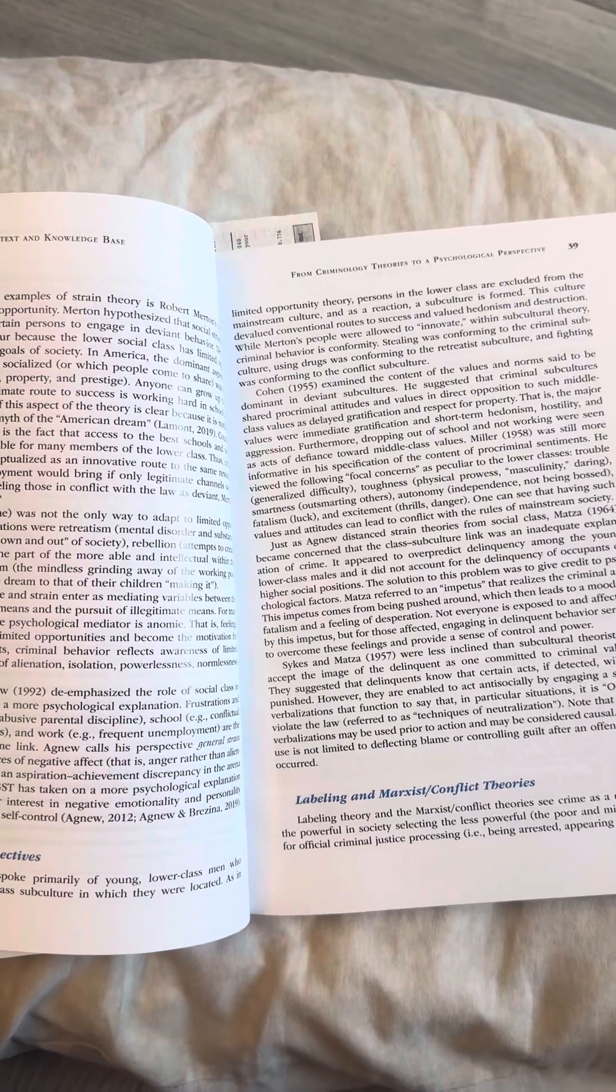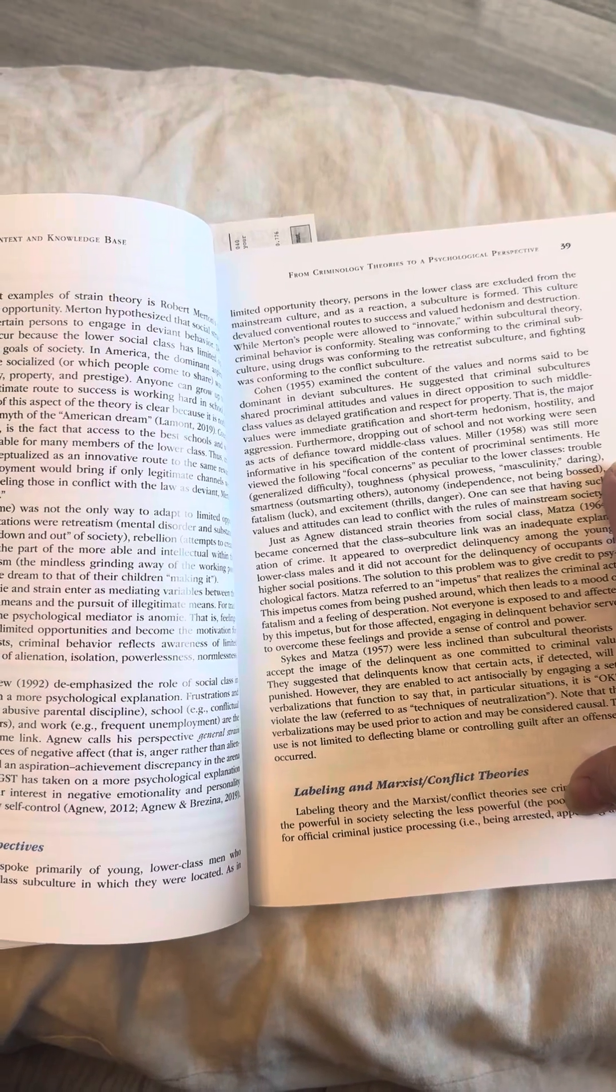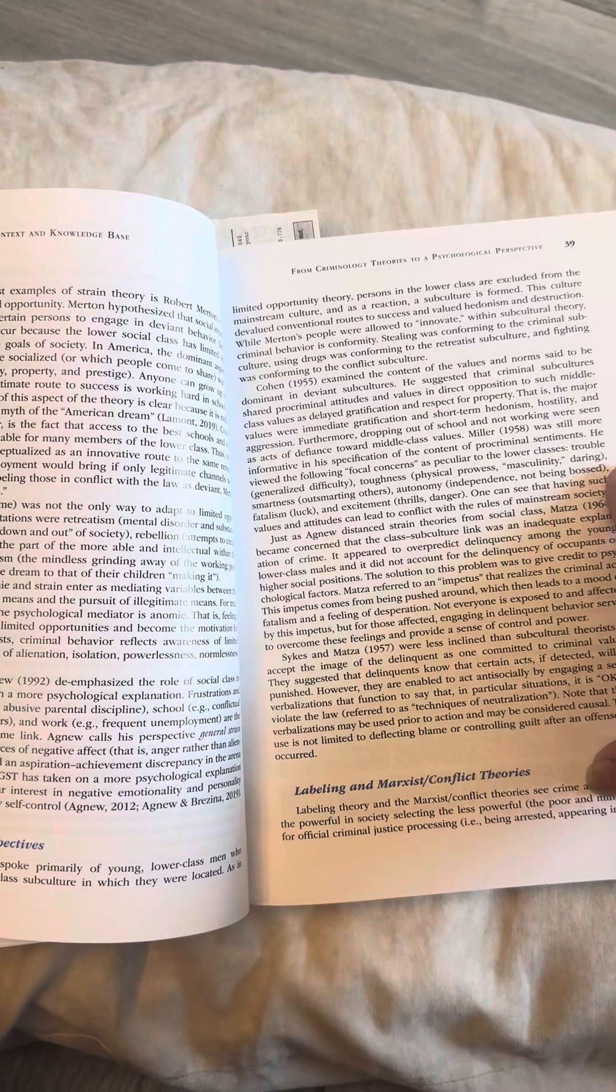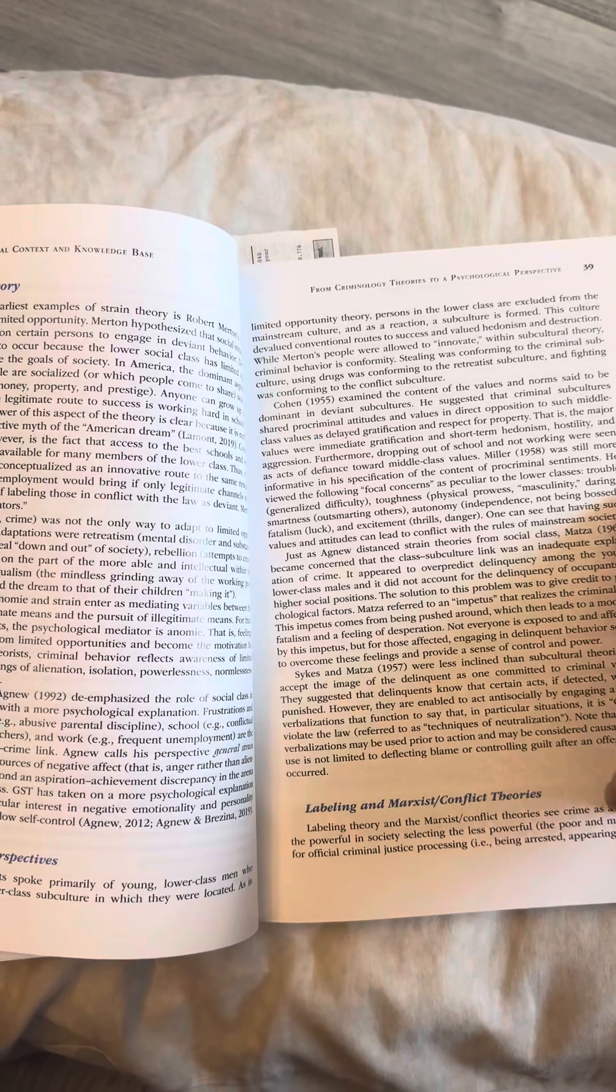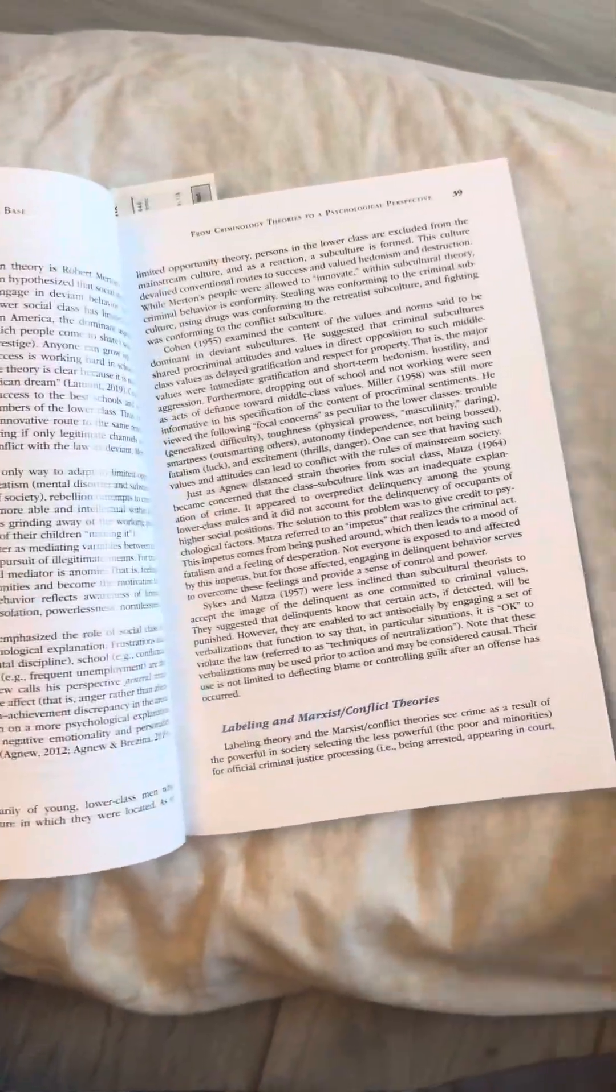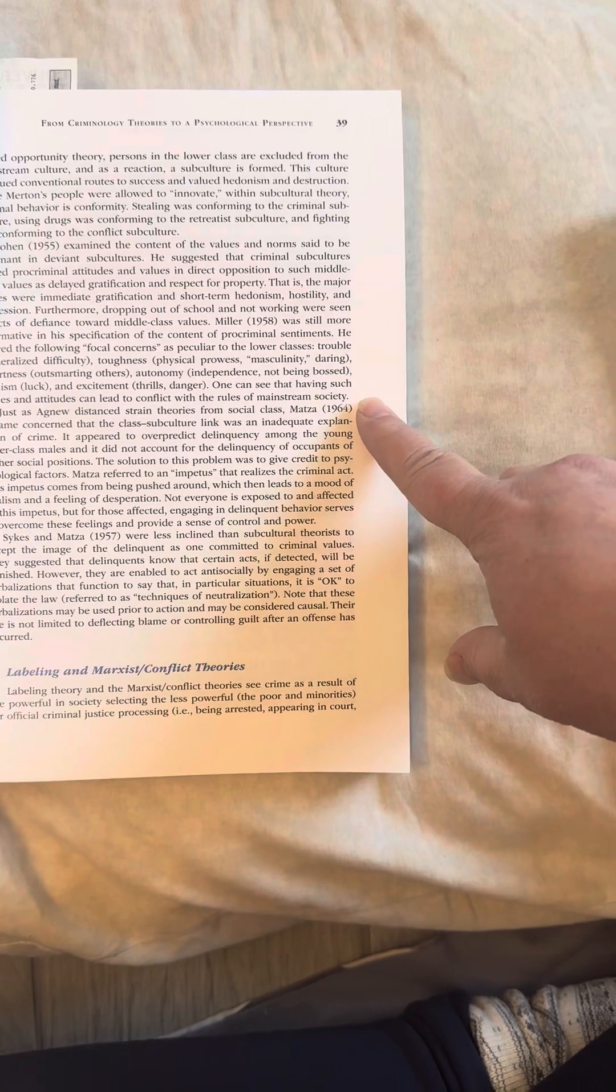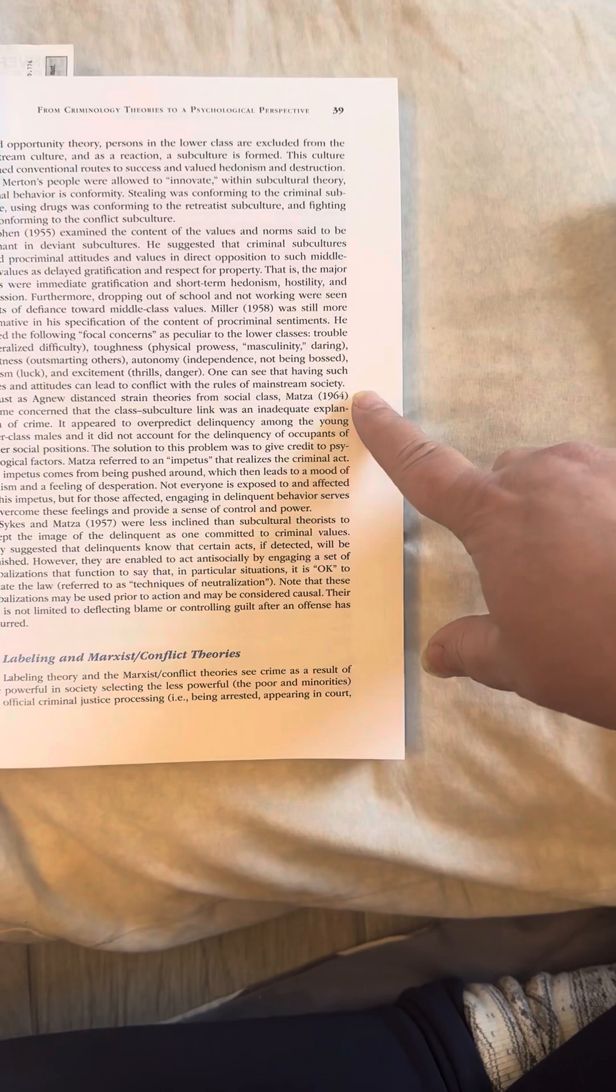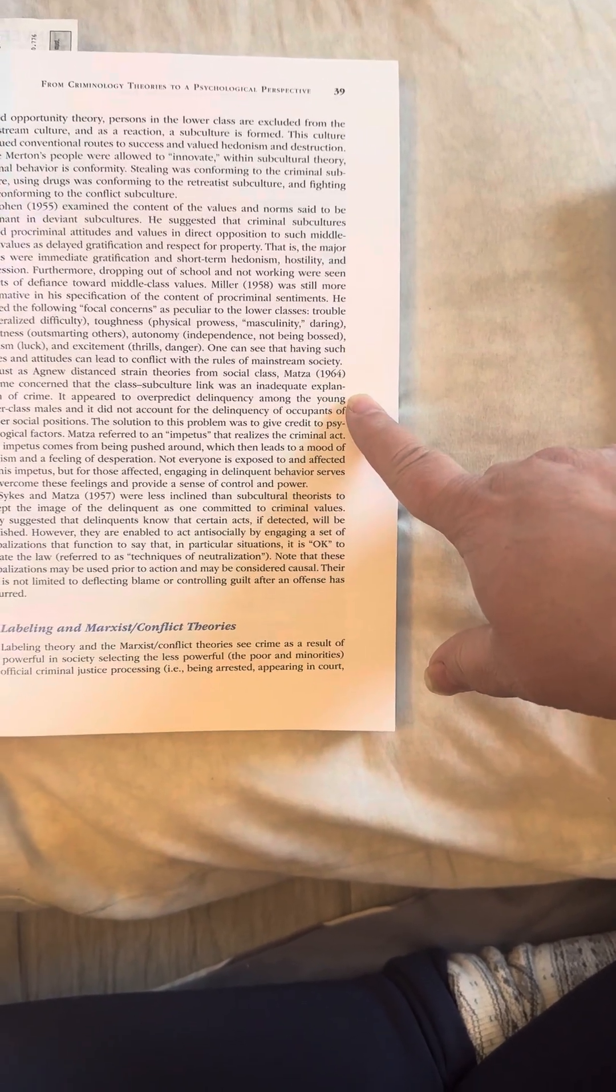Miller, 1958, was still more informative in his specification of the content of pro-criminal sentiments. He viewed the following focal concerns as peculiar to the lower classes: trouble, generalized difficulty, toughness, physical prowess, masculinity, daring, smartness, outsmarting others, autonomy, independence, not being bossed, fatalism, luck, and excitement, thrills, danger. One can see that having such values and attitudes can lead to conflict with the rules of mainstream society.